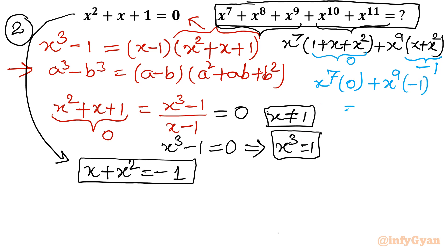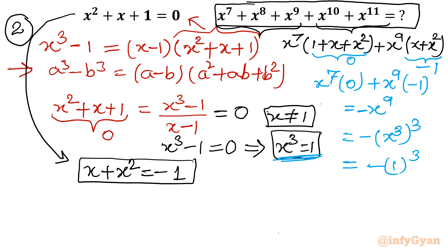So this comes out as: x power 7 times 0 plus x power 9 times minus 1, since the first bracket is 0. Ultimately we get negative x power 9. And x power 9 equals x cube whole cube. Since x cube equals 1, this becomes negative of 1 cubed, which equals negative 1.